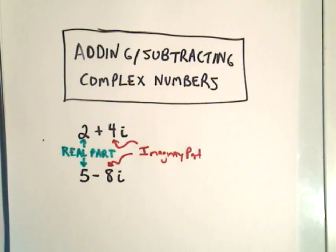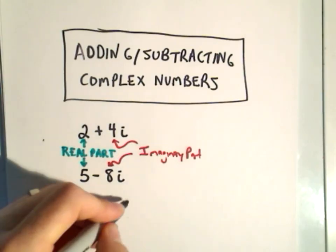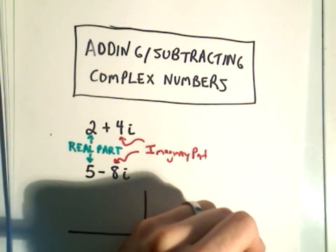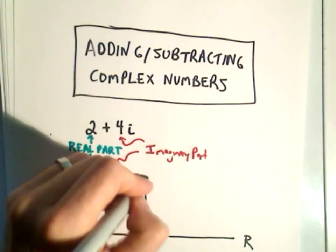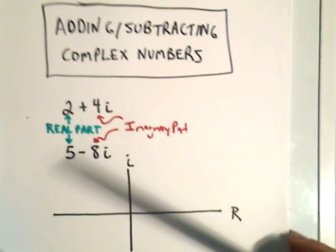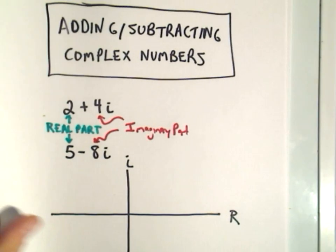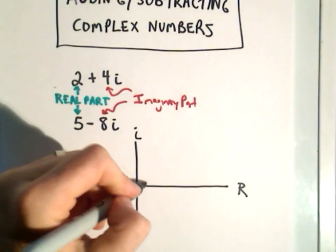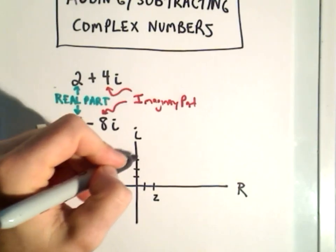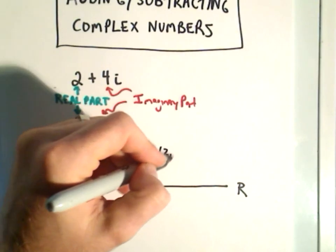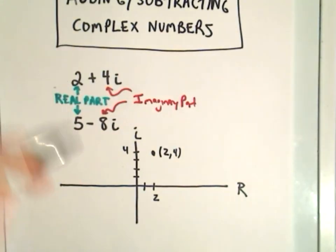We can graph these — often times they'll graph complex numbers almost like x and y coordinates. We call the x coordinate the real axis and the y coordinate the imaginary axis. So 2 plus 4i, we can graph that by moving 2 units to the right and then 4 units up. That point 2 comma 4 represents 2 plus 4i.